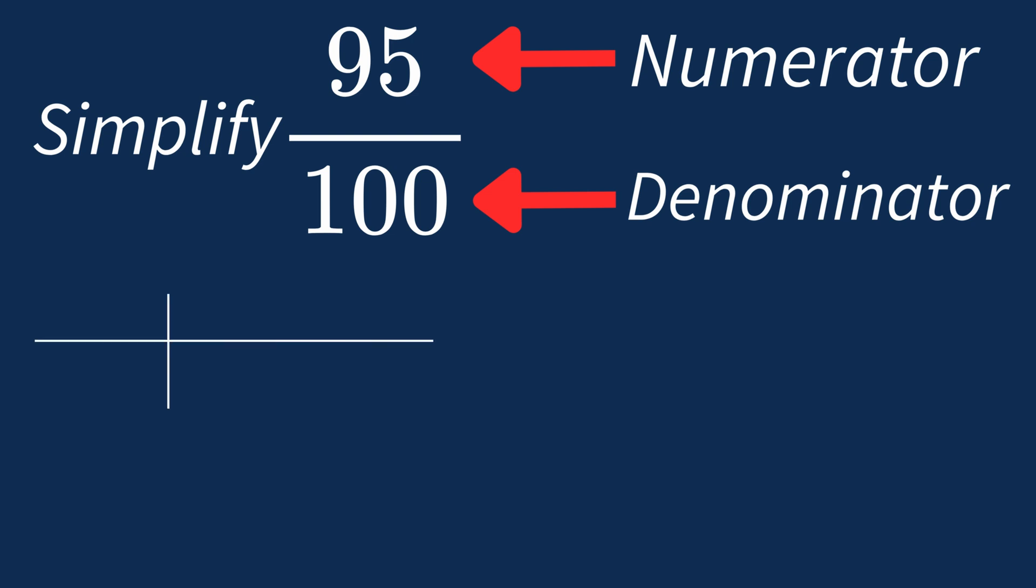First, let's list out the factors for each. For 95, the factors are 1, 5, 19, and 95.